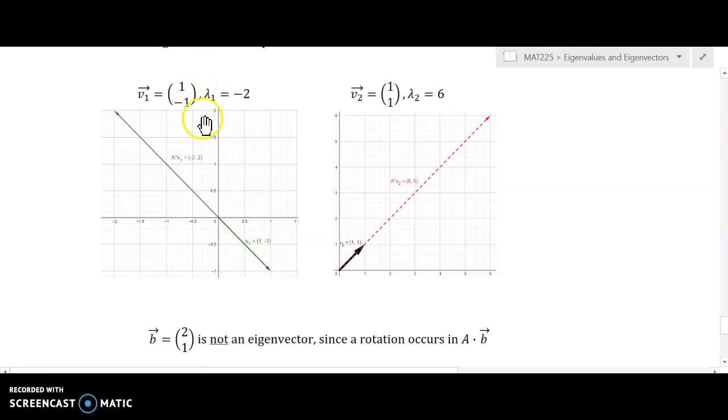So here's my input vector. That's the [1, -1] vector. And when I multiply it by A, I get the vector [-2, 2]. And so you can see it's not really a stretch or a compression. It's a stretch, but in the opposite direction.